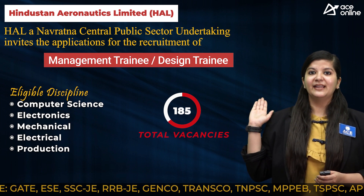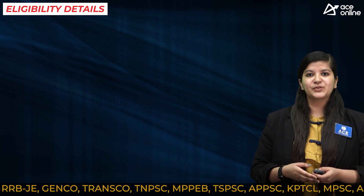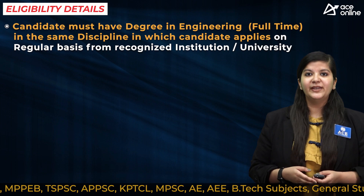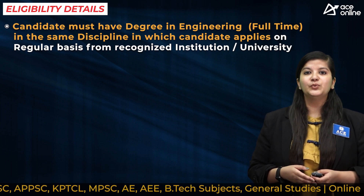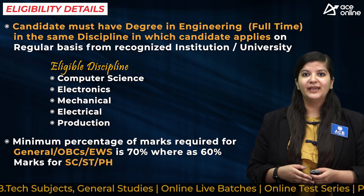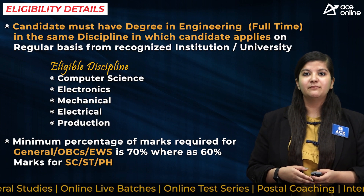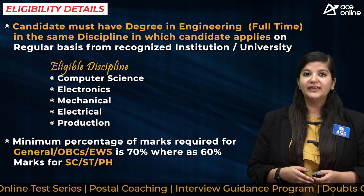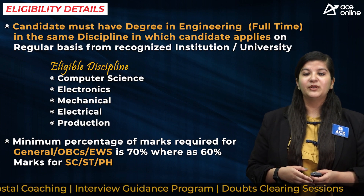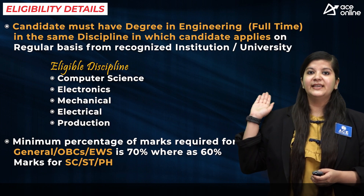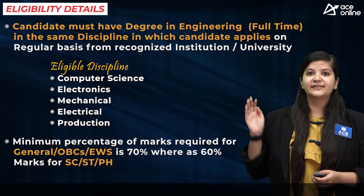Candidates from the above mentioned disciplines are eligible to apply. For essential educational qualifications, candidates need to have a degree in engineering from a well-recognized university or institute on a regular basis. The degree should be in the same discipline in which they are applying. General category candidates need a minimum of 70 percent marks, while reserved category candidates — that is SC, ST, and PWD — need a minimum of 60 percent marks.